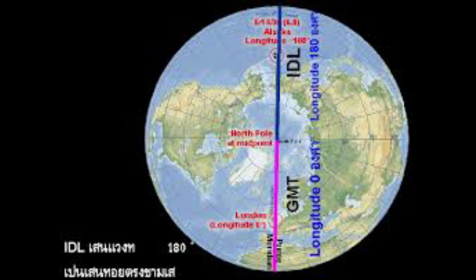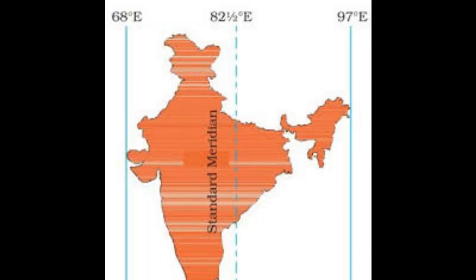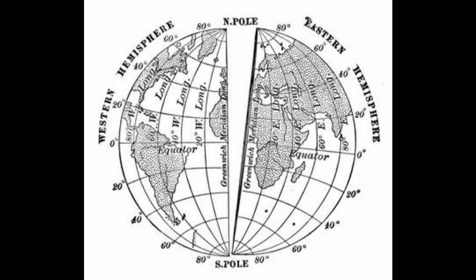The last point we are going to study is Indian Standard Time, IST. India lies between 68 degrees east longitude and 97 degrees east longitude. Several longitude lines pass through India, so having different local times for each would not be logical. Hence, 82.5 degrees east line of longitude is taken as the standard meridian for the whole country. That is why 82.5 degrees east is India's standard meridian.